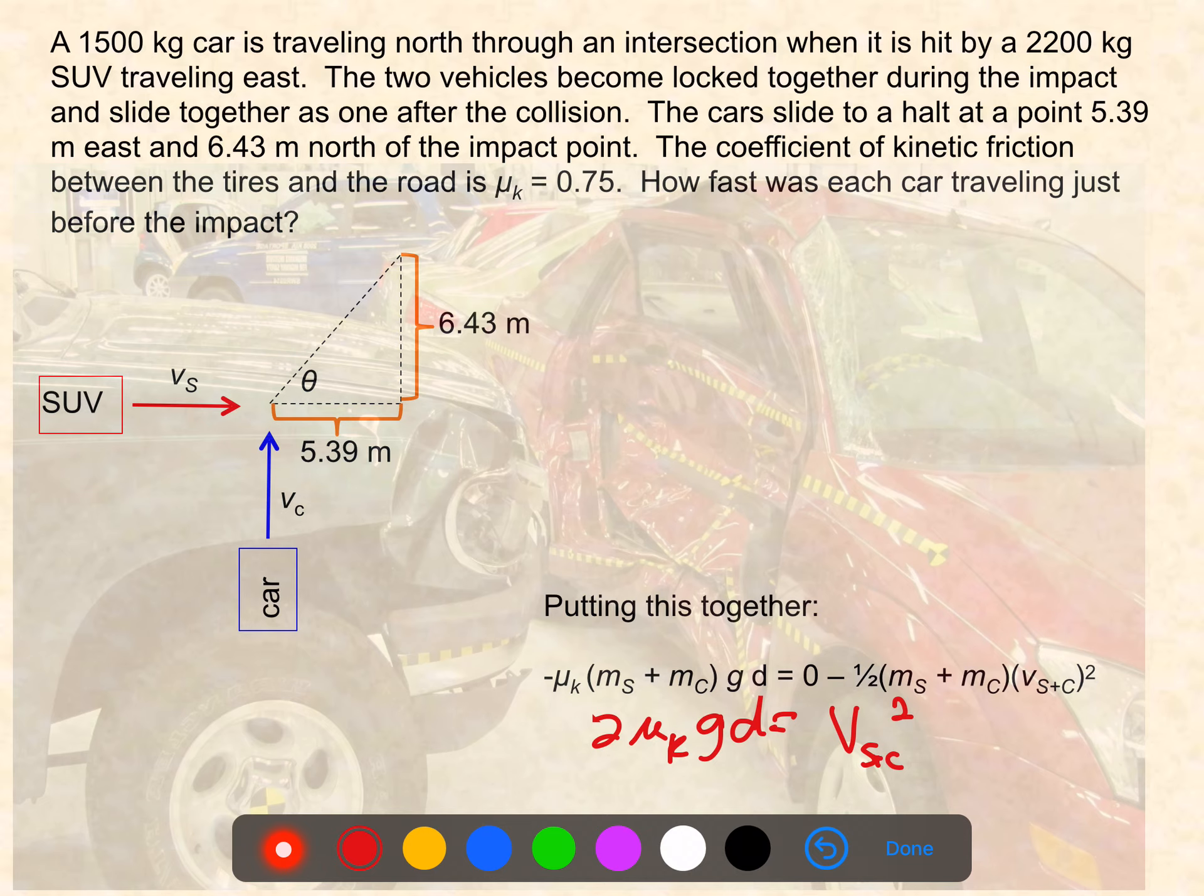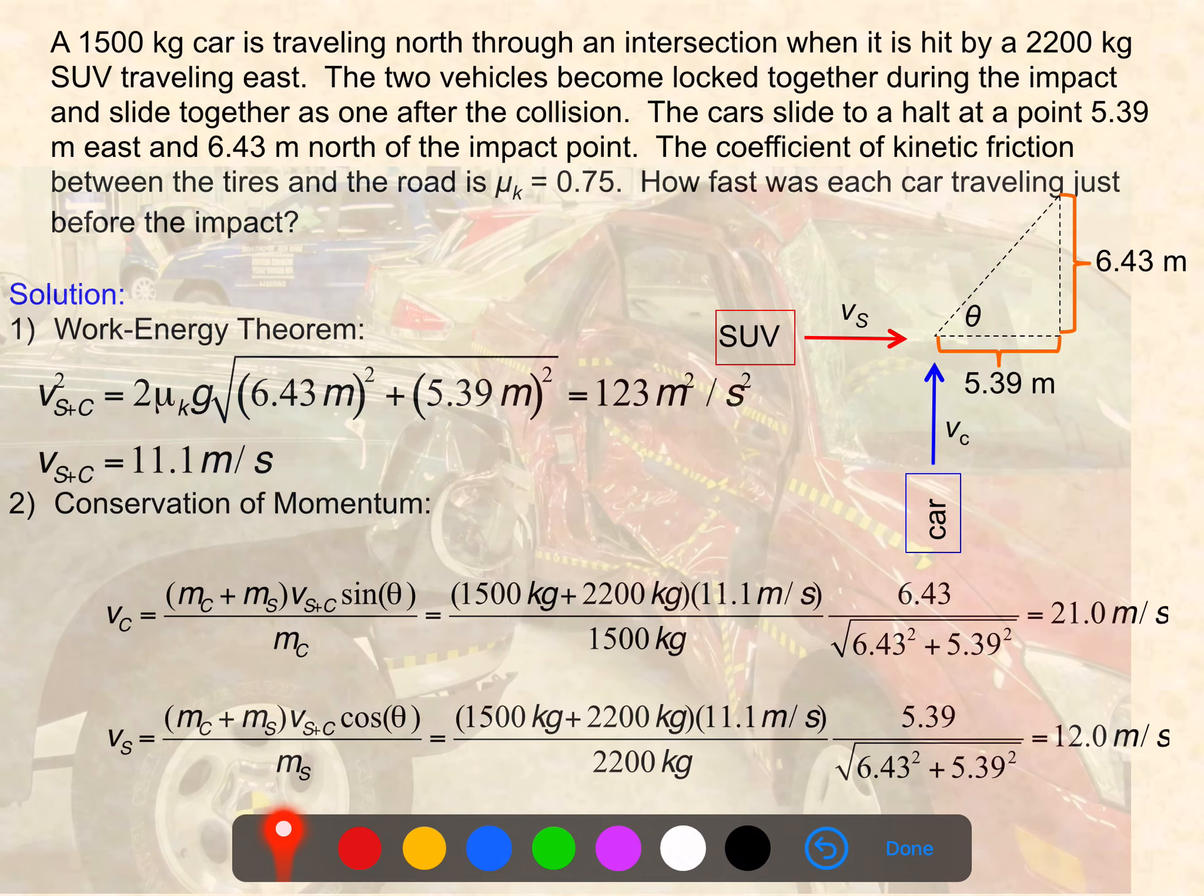We can then use that as our strategy was already telling us we wanted to do in order to solve for this combined velocity. And once we know that, we'll be able to plug it into the equations that we found earlier using conservation of momentum in order to solve for the individual velocities.